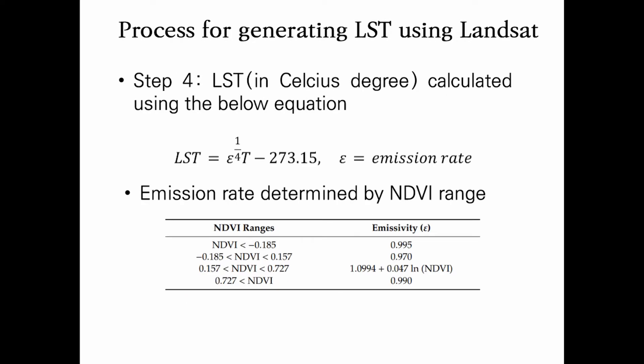The final step, Step 4, is the calculation of LST in Celsius degrees using the equation below. In this equation, the emissivity value is used. The emissivity is determined by the NDVI range — the vegetation index. The table below represents the NDVI ranges and the corresponding emissivity values. You can choose the appropriate emissivity value depending on the NDVI range.